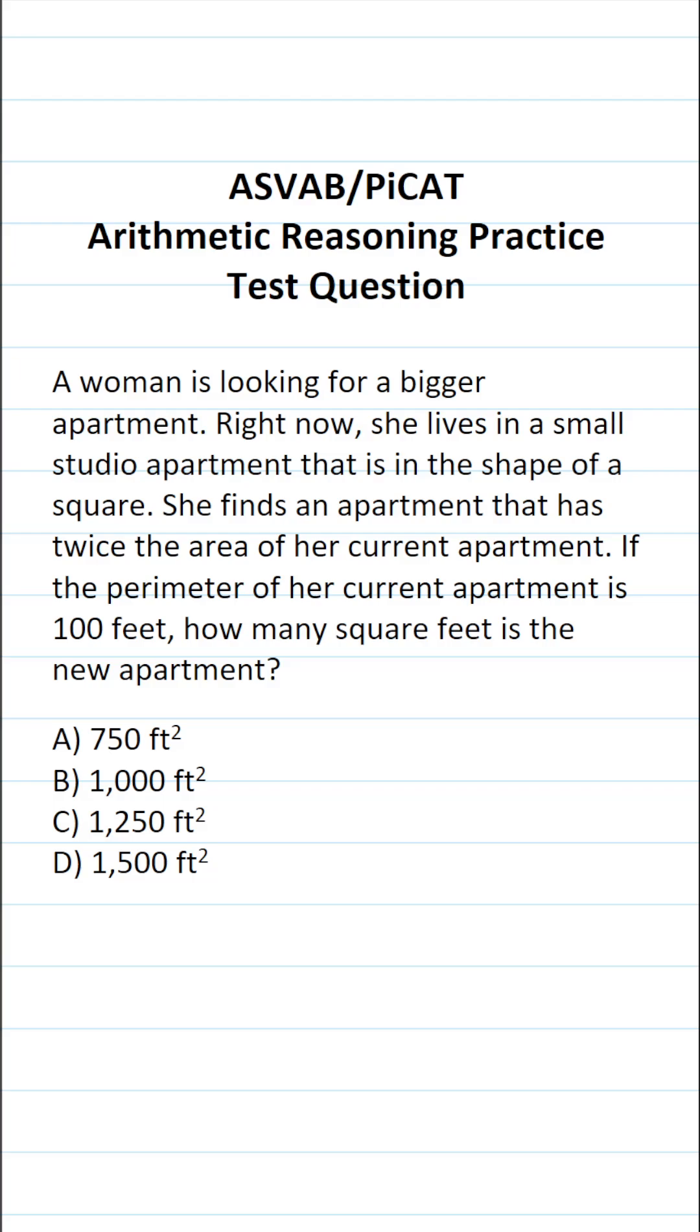This arithmetic reasoning practice test question for the ASVAB and PICAT says, a woman is looking for a bigger apartment. Right now she lives in a small studio apartment that is in the shape of a square. She finds an apartment that has twice the area of her current apartment. If the perimeter of her current apartment is 100 feet, how many square feet is the new apartment?